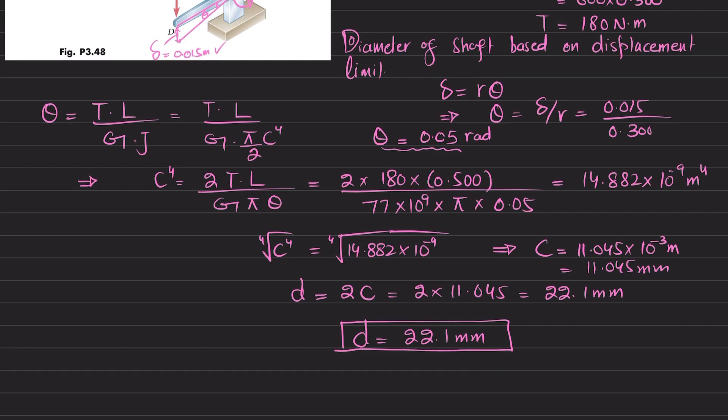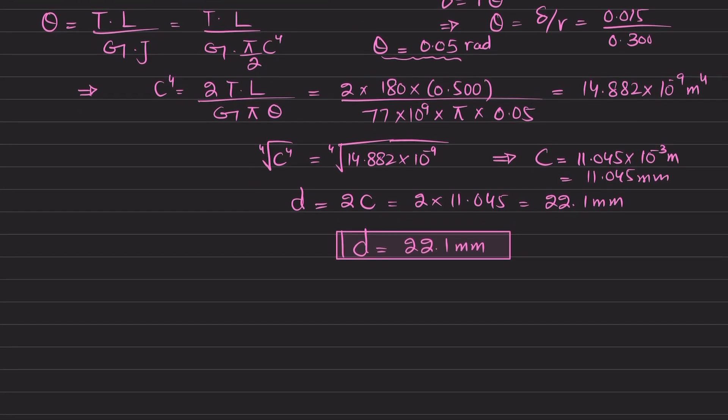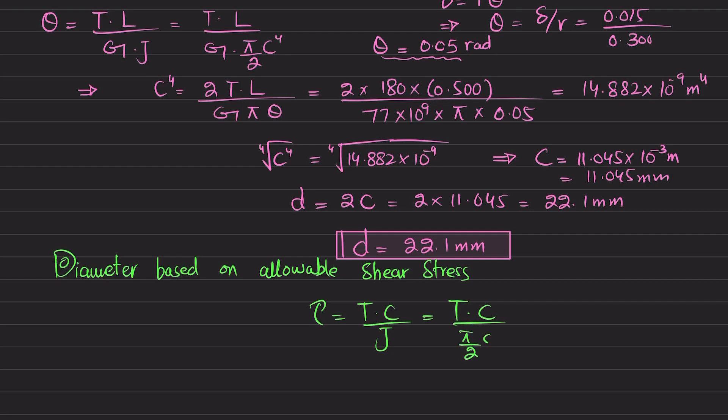Now we will find the diameter based on allowable shear stress. We know that allowable shearing stress tau equals T times c divided by J, where J is pi over 2 times c to the fourth.